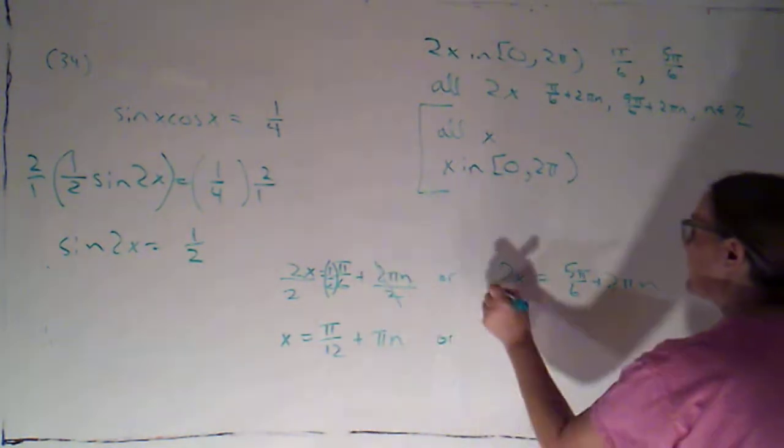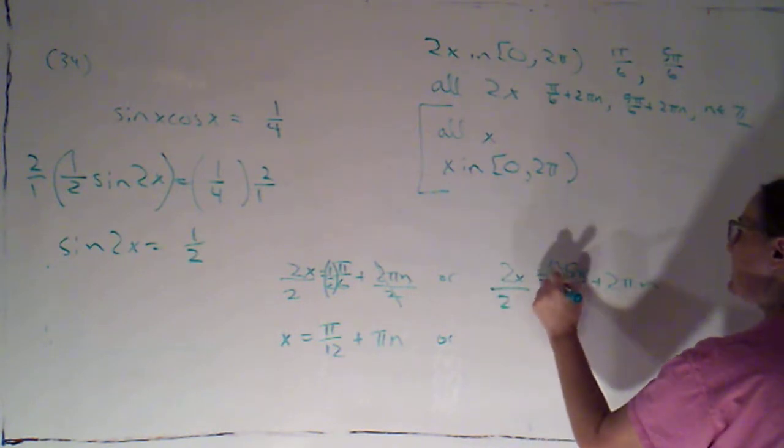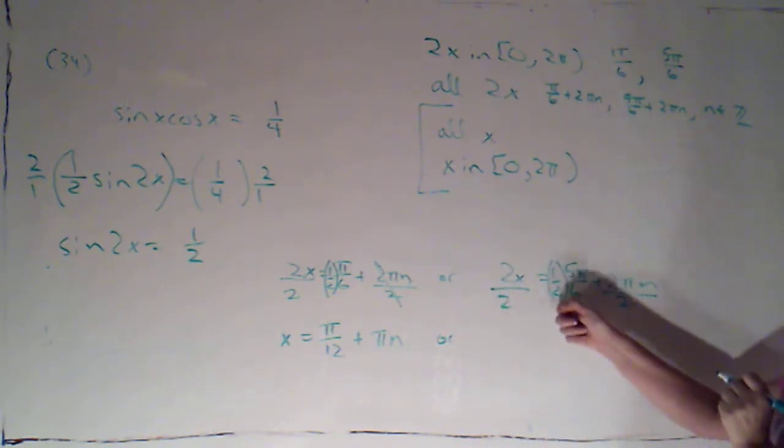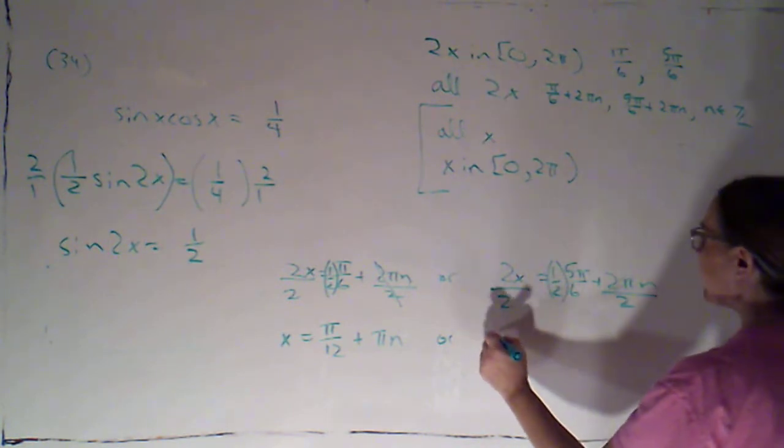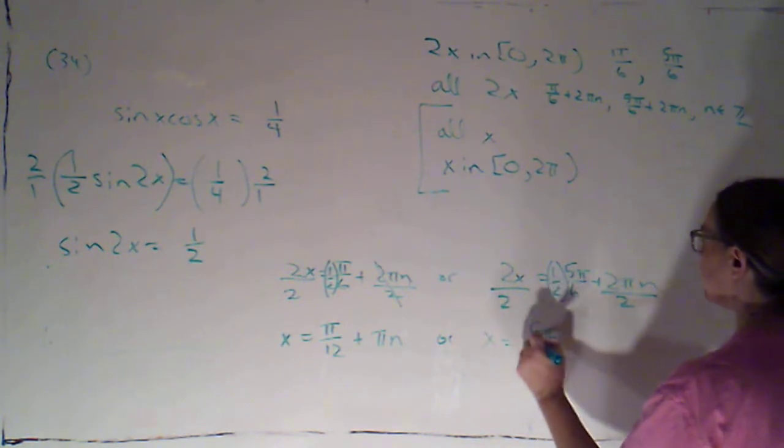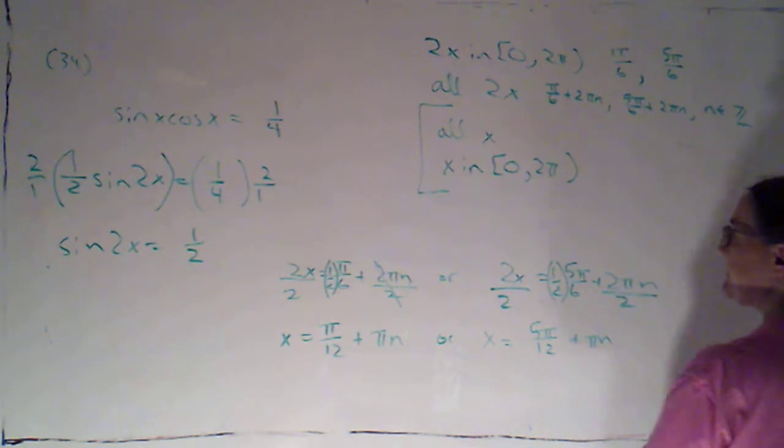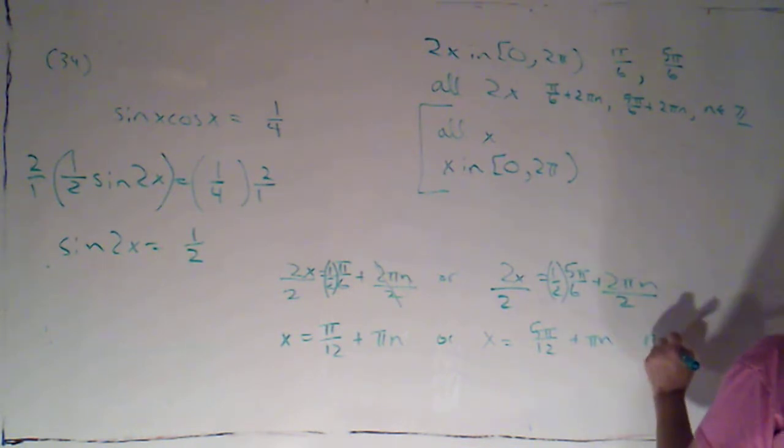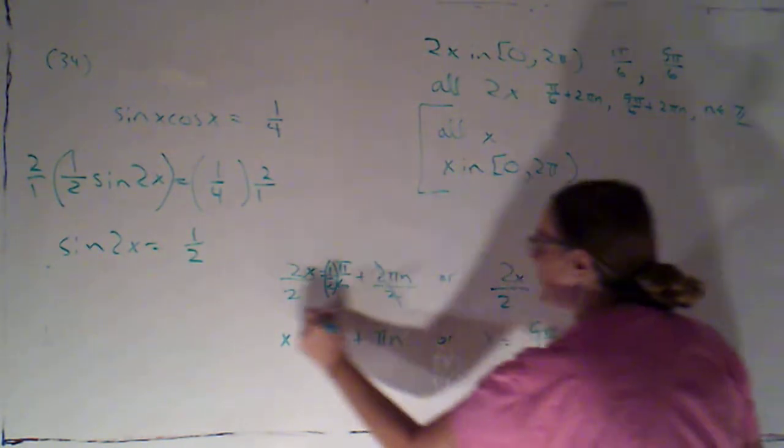Or, here, same thing, divide each piece by 2. So I get x is equal to 5 pi over 12 plus pi n where n is an integer.